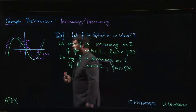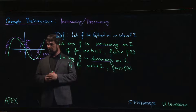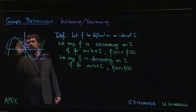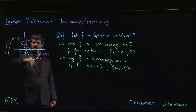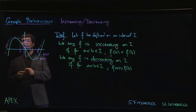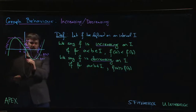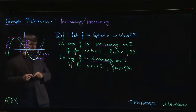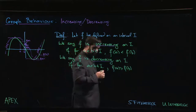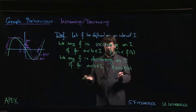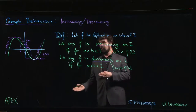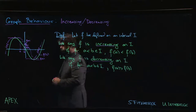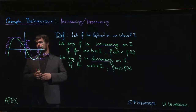Before we move on — and we'll get to this in the next video — you might notice something about the points where the function appears to transition from increasing to decreasing. They are exactly the points where the tangent line is horizontal: the critical points, where the derivative is zero. These critical points are transition points between intervals of increase and decrease, and we'll spend a fair amount of time dealing with that.